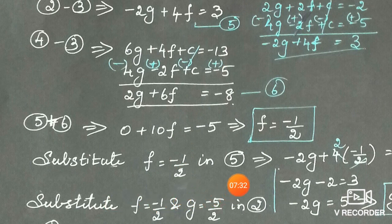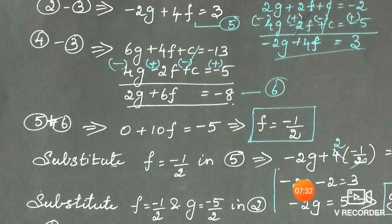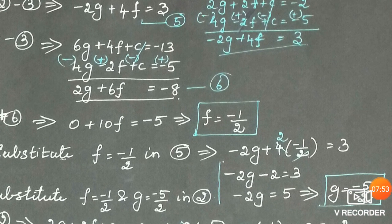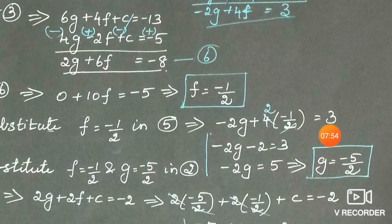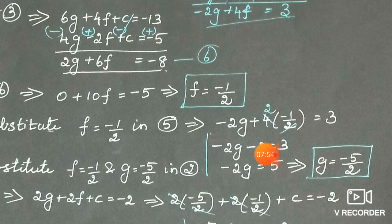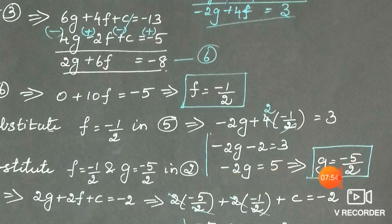Using the 5th equation -2g + 4f = 3, substitute f = -1/2: -2g + 4(-1/2) = 3. The 4 and 2 cancel giving -2g + (-2) = 3. Moving -2 to the right side: -2g = 3 + 2 = 5, so g = -5/2.